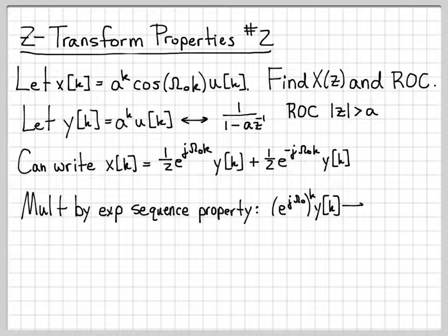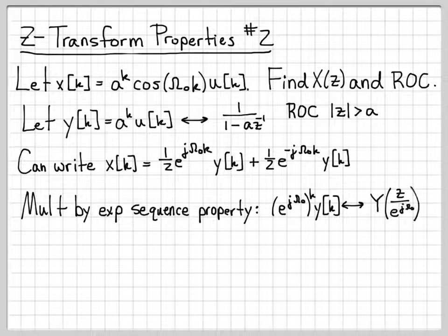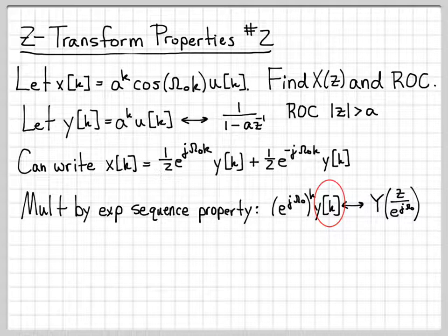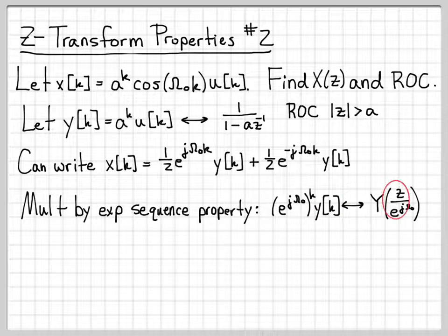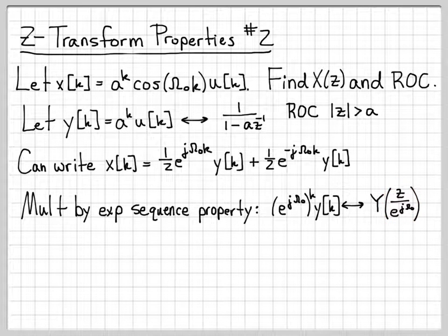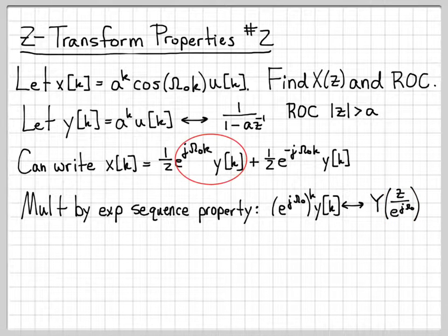If this is what I had, the exponential sequence property says that in the Z-domain, you should take the Z-transform of y, Y(z), and replace all the z's that you see with z divided by e^(jω₀).